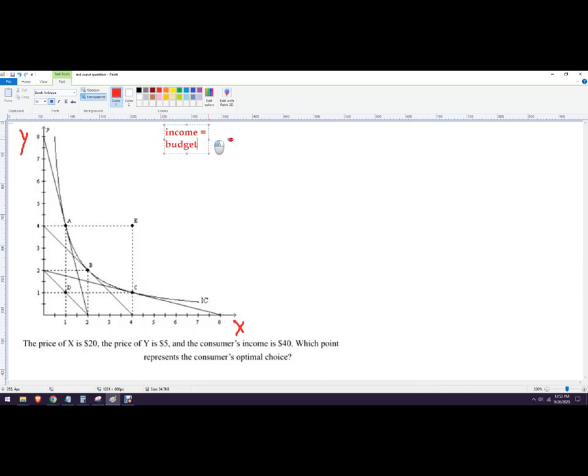This type of problem has a name in case you want to go looking for other things. This is called a utility maximization problem, it can also be called a consumer choice problem, and for you engineering guys and calculus people, this is called a constrained optimization problem. They're all the same thing.